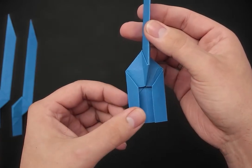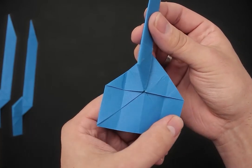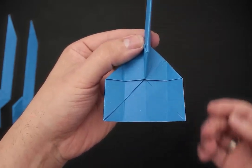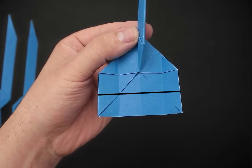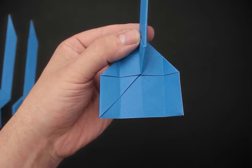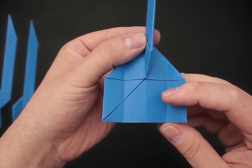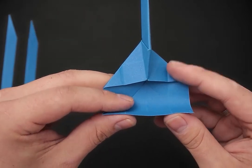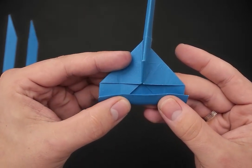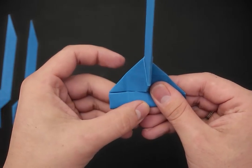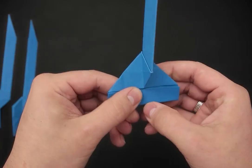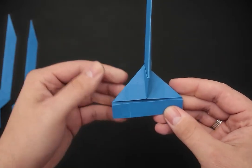Then we unfold, and we fold the bottom side in half. To do this, just bring the edge to this existing line here, and then unfold.